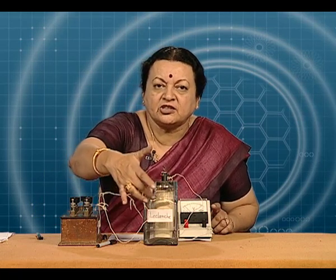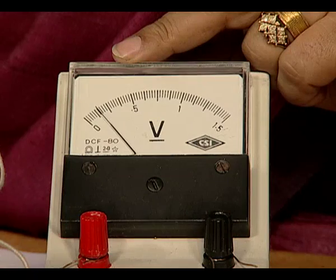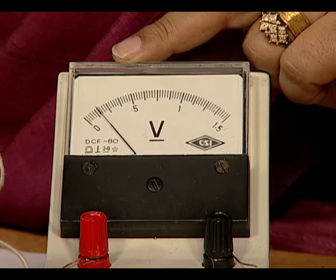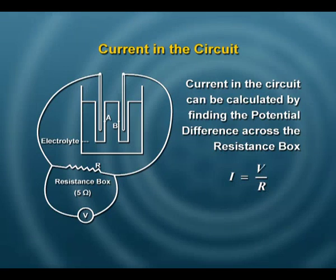So the potential difference across the external resistor and the potential difference across the internal resistance of this cell should add up to 1.4 volts. This measured value is 0.15 volt. Can we calculate this value of internal resistance? We could if we knew the current in the circuit. I do not have an ammeter right now — I have only a voltmeter.